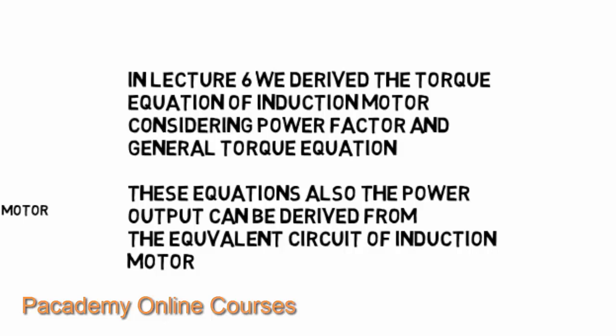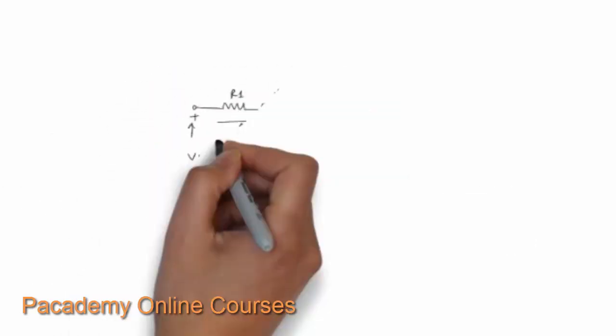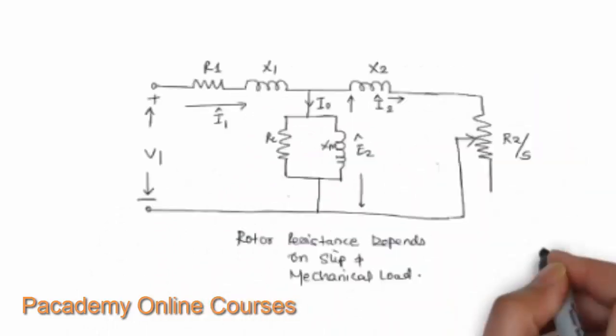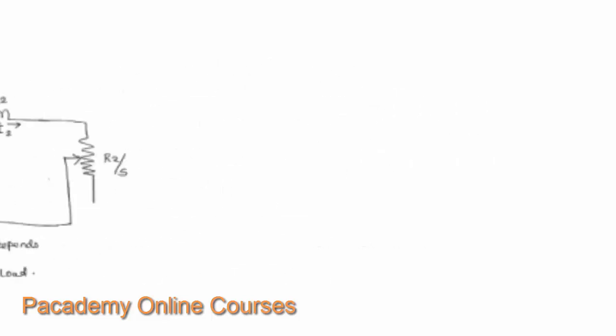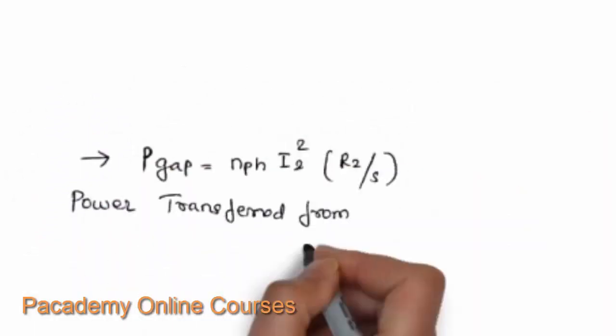The starting torque and the running torque were found, and the torque varied according to the rotor current, the flux in the air gap, and the power factor of the machine. Looking at the equivalent circuit derived earlier: v1 is the supply voltage per phase, r1 is the stator resistance per phase, x1 is the stator reactance per phase, i-naught is the magnetizing current, rc is the core loss component, xm is the magnetizing reactance, x2 is the rotor reactance, and r2/s is the rotor resistance which varies with slip.